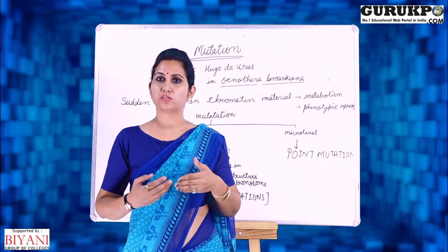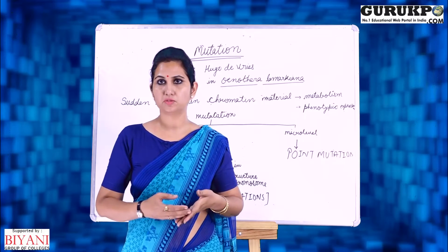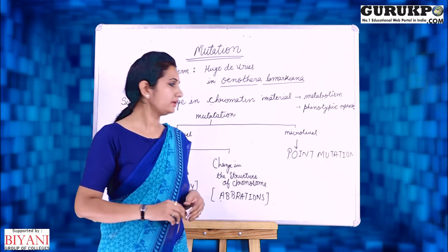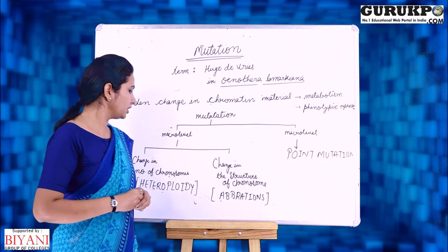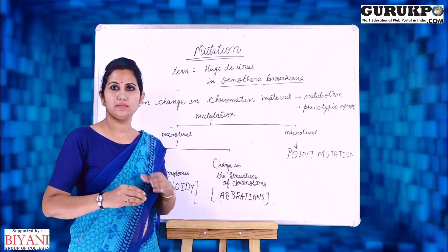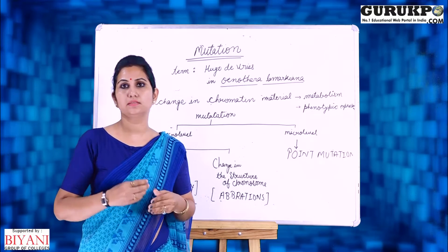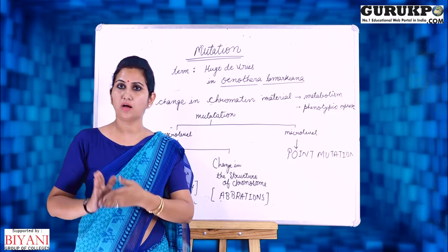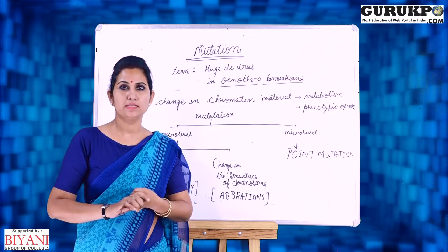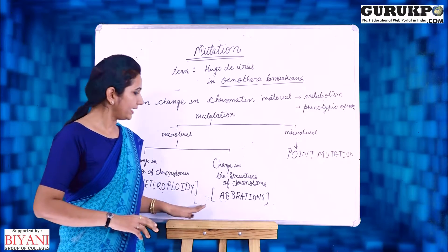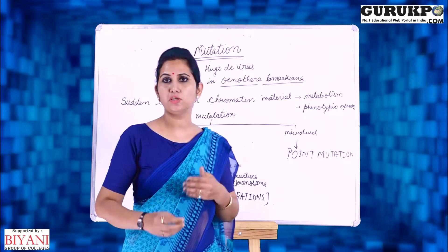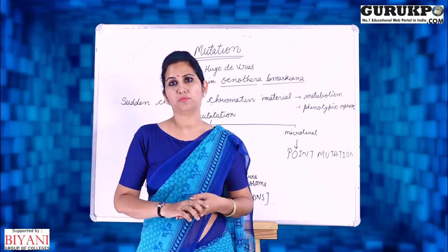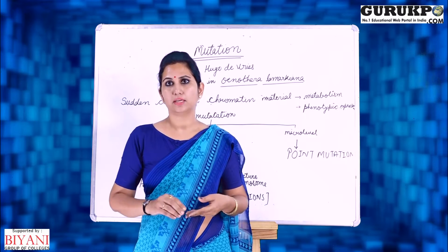On the micro level, the changes occur at the gene level, so such mutations are known as point mutations. On the macro level, we include changes in the number of chromosomes and changes in the structure of chromosomes. If the change in chromosome number occurs, it is known as heteroploidy, and if the change in chromosome structure occurs, it is known as chromosomal aberration.